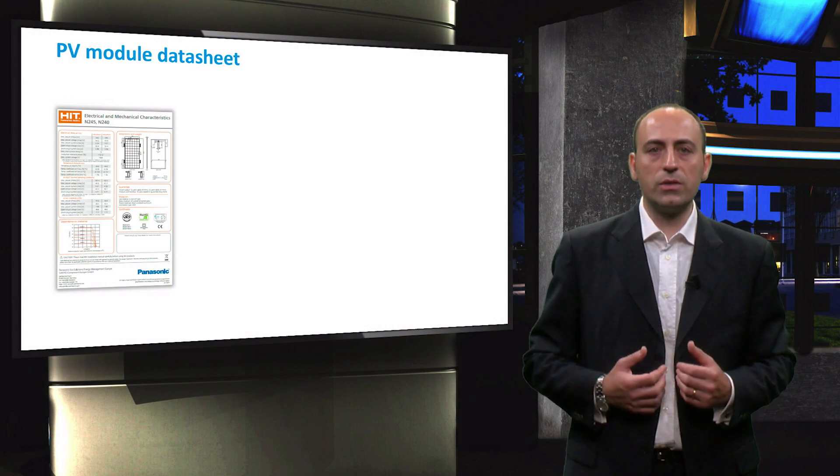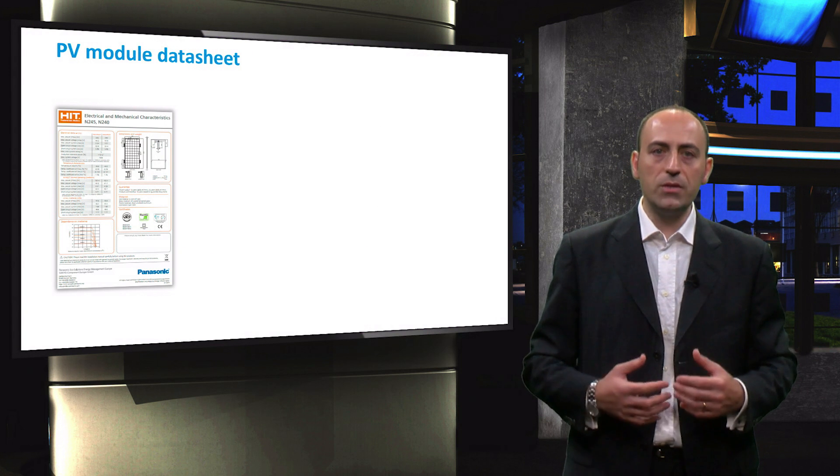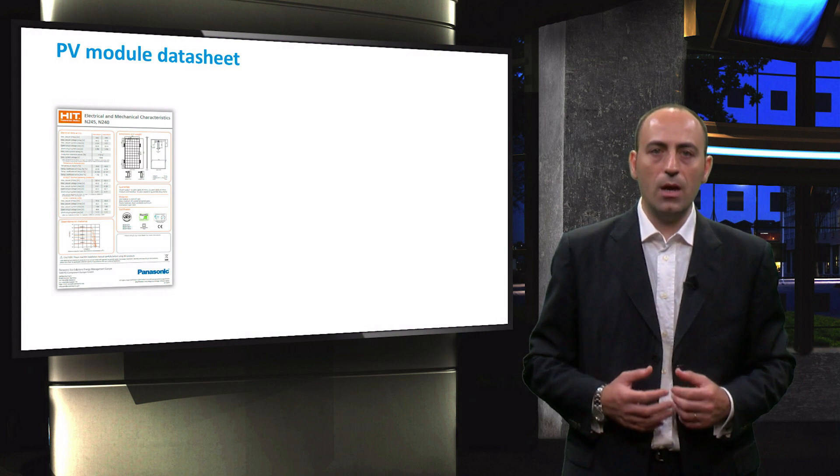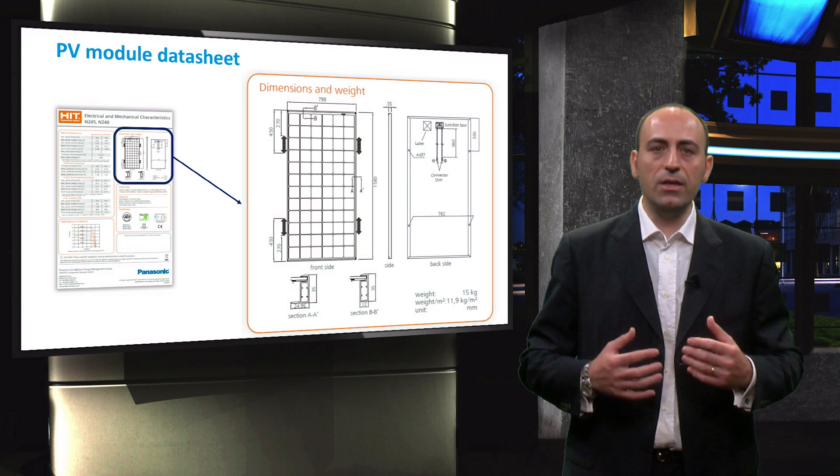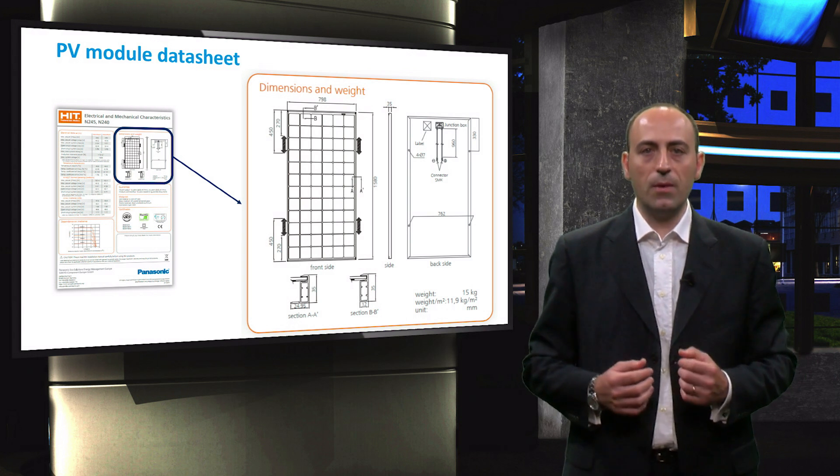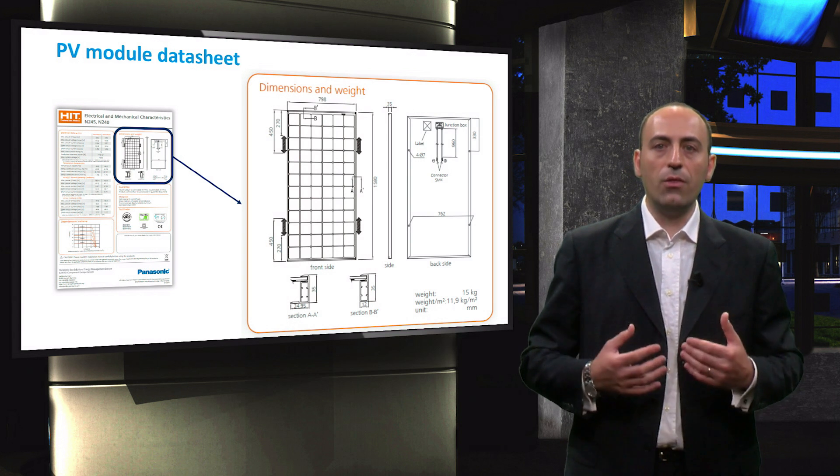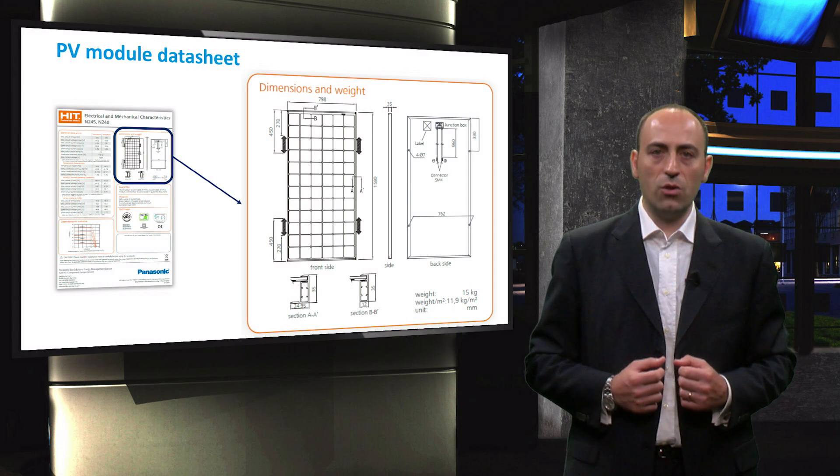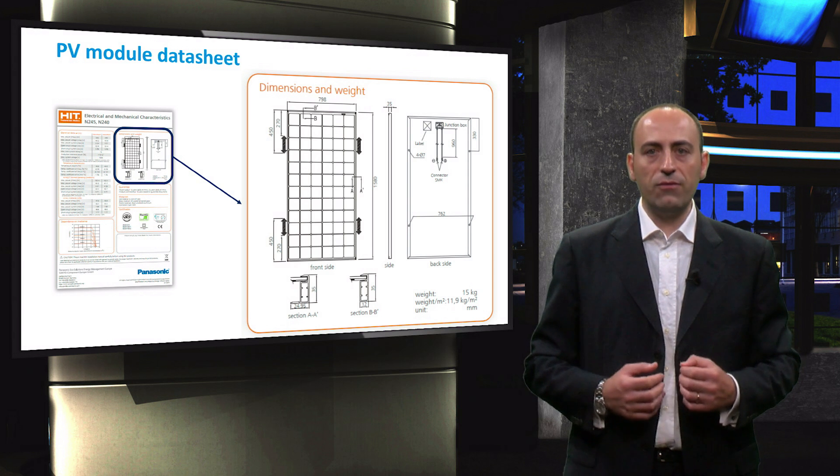This is how a datasheet looks like, and here as an example we have a module by Panasonic based on heterojunction technology. This highlighted part is on the top right of the datasheet and deals with the dimensions and weight. Especially the first are important information for calculating the module area and thus the power incident on the surface when the irradiance is known.